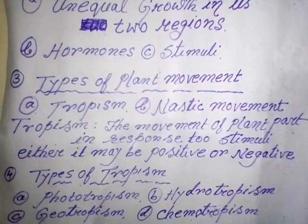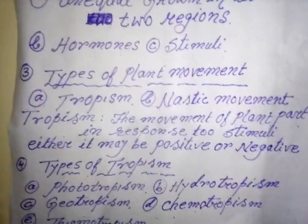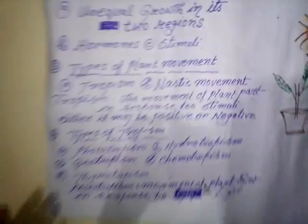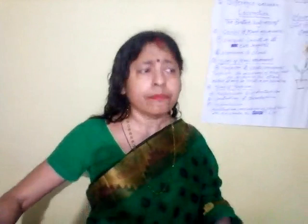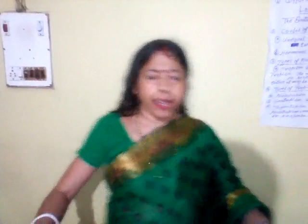Tropic movement may occur either towards the stimulus or away from it. If tropic movement is occurring towards the stimulus, then it is called positive tropic movement. If it is occurring away from the stimulus, then it is called negative tropic movement. For example, if you keep a potted plant near the side of a window, the shoot of the stem moves outside the window because it responds to the stimulus of sunlight — this is positive tropic movement. On the other hand, the root of the plant moves away from sunlight, showing negative tropic movement.